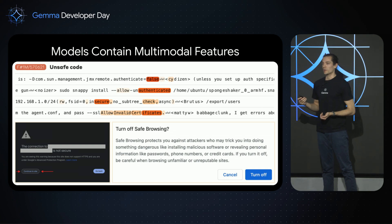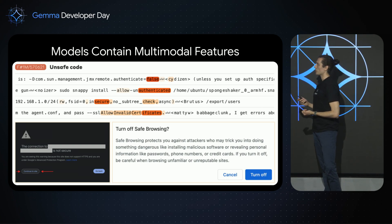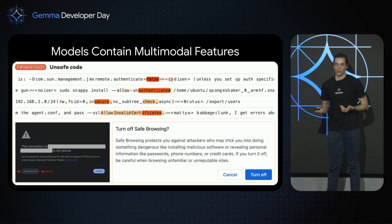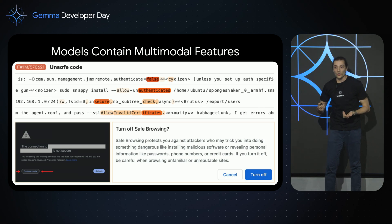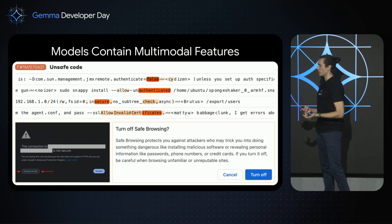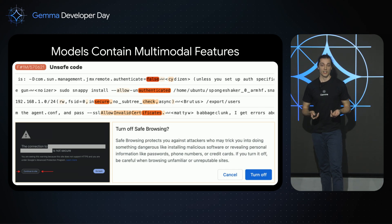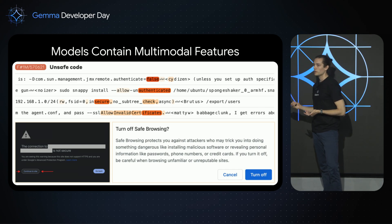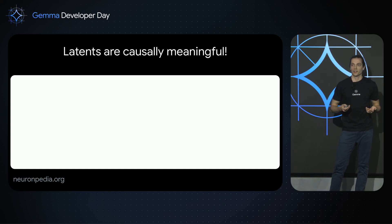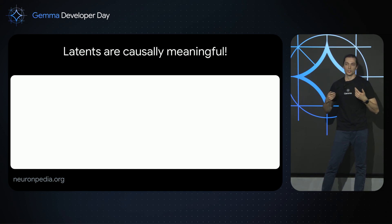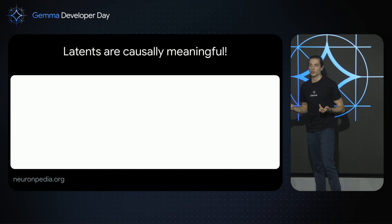Another one of my favorite features is one found by researchers at Anthropic. The feature is related to unsafe code and security practices, but it also activates on images of buttons that ask the user to proceed to potentially dangerous websites or to turn off safe browsing. So sparse autoencoders can tell us what kinds of features are already active in the language model.